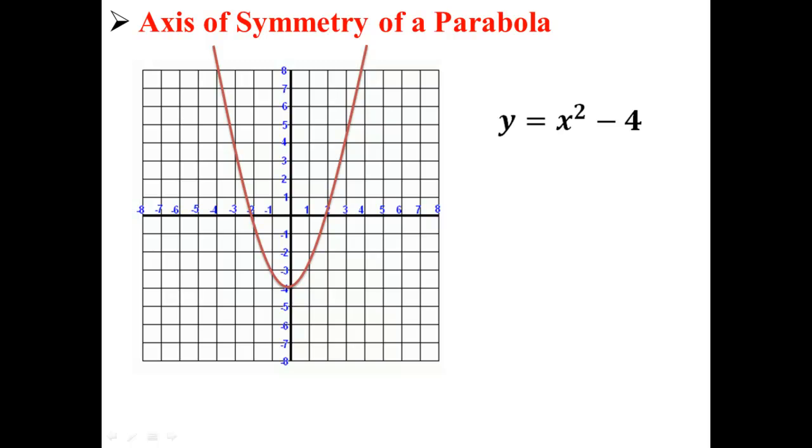Here we have a graph of a parabola that opens upward. The equation for this parabola is y equals x squared minus 4. How would we find the axis of symmetry of this parabola? Well, we actually have an equation to do that.